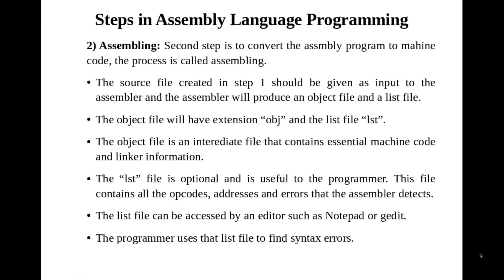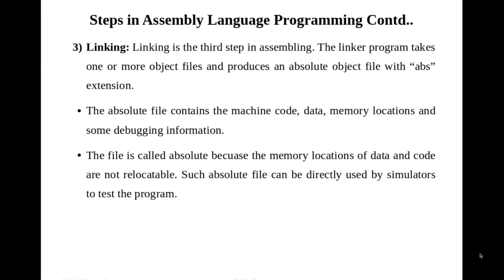The third step is linking. The linker program takes one or more object files and produces an absolute object file with a .abs extension. The absolute file contains the machine code, the data on which that code will work, and memory locations along with some debugging information. The file is called absolute because the memory locations of data and code are not relocatable — they cannot be changed. Such an absolute file can be directly used by simulators like Keil to test programs, and can be directly executed by such simulators.